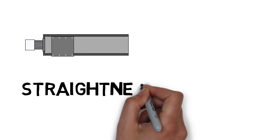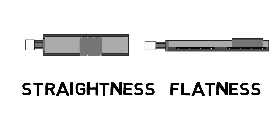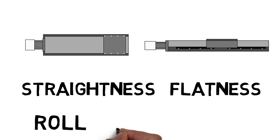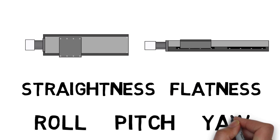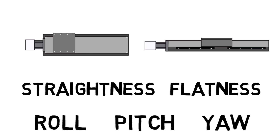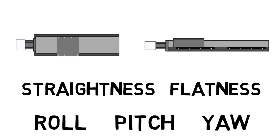In addition to straightness and flatness, there are three types of angular errors that a stage will exhibit. Roll, pitch, and yaw define rotations about a 3-axis coordinate system.